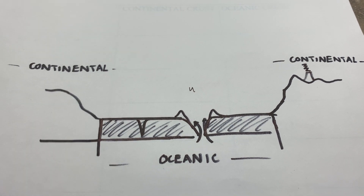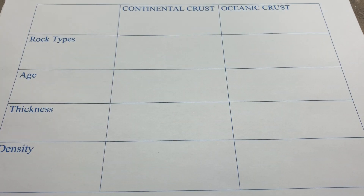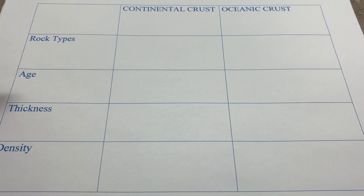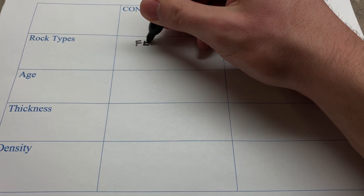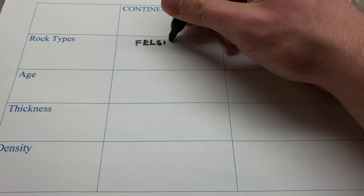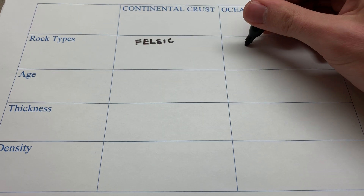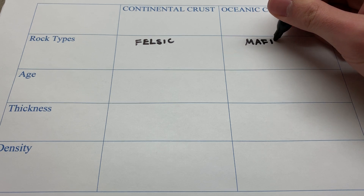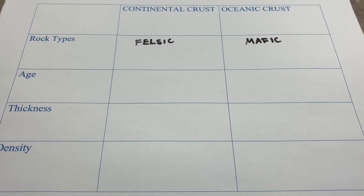I want to go into four categories specifically and give a general comparison of these two different types of crust: rock types, age, thickness, and density. Starting with the rock type, the big difference to note here is that continental crust is going to have mostly felsic rocks and some intermediates, and oceanic crust is going to have mostly mafic rocks. Felsic versus mafic — these are kind of weird terms. Felsic means it comes from the combination of feldspars and silicates.